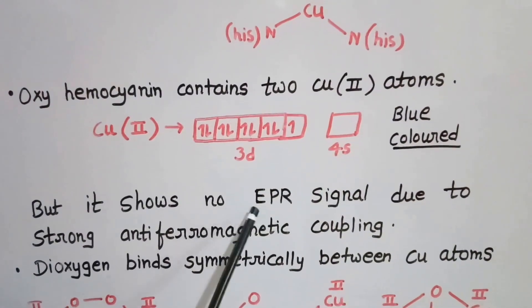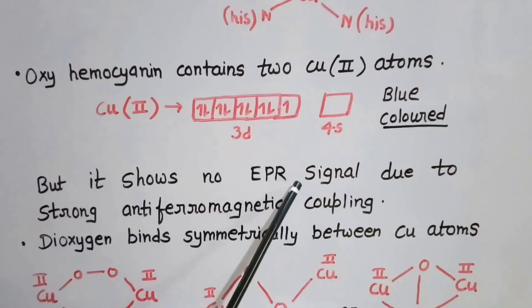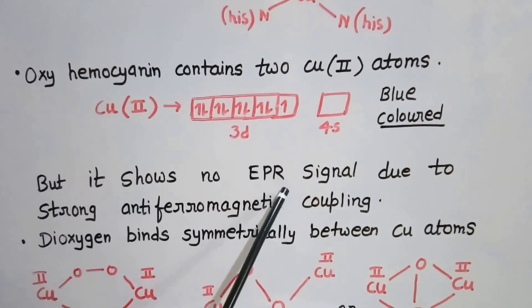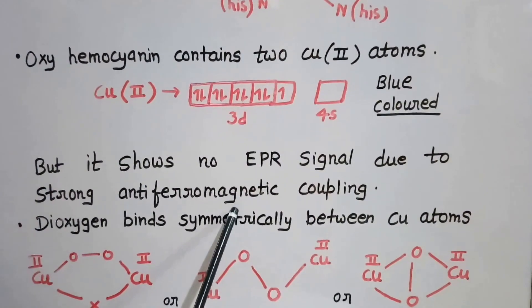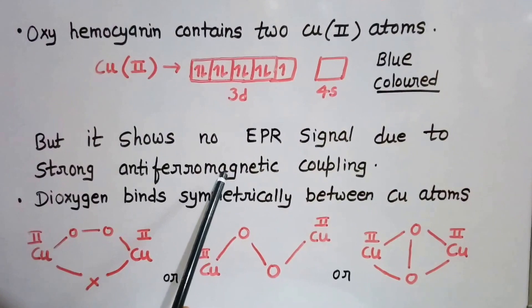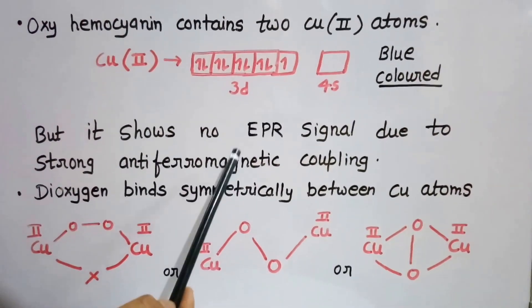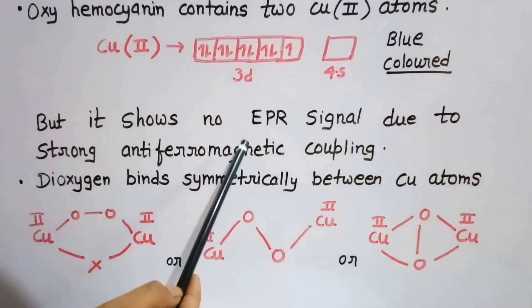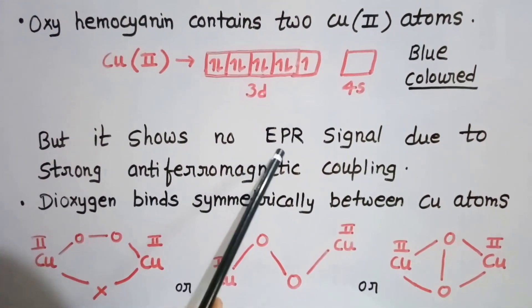But it does not show any EPR signal, though it should because of the unpaired electron. This is due to strong antiferromagnetic coupling. What is antiferromagnetic coupling? The spins of two unpaired electrons of two copper atoms are in opposite directions and cancel each other. Therefore, it does not show any EPR signal.